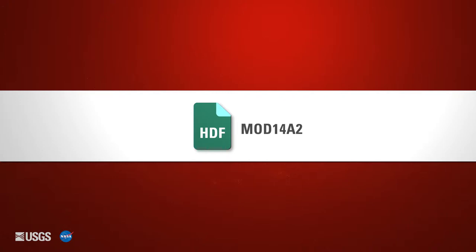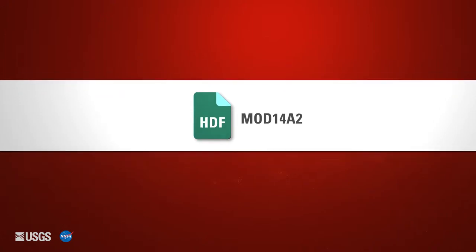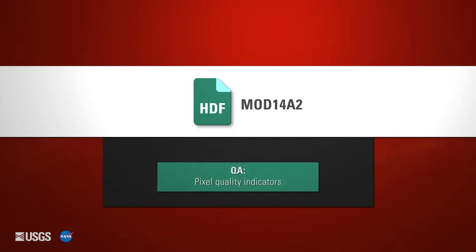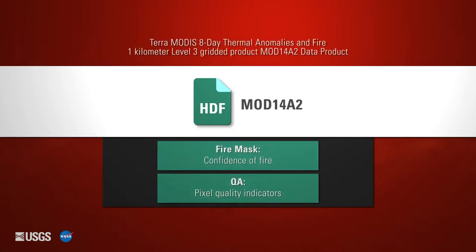Each Thermal Anomalies and Fire product is distributed as a Hierarchical Data Format or HDF file. Each MODIS Thermal Anomalies and Fire HDF file contains a Quality Science Data Set layer which provides users with information regarding the usability and usefulness of the data products. Here is an example of the quality layer for the Terra MODIS Version 6 8-Day Thermal Anomalies and Fire 1 Kilometer Level 3 Gridded Product MOD14A2.